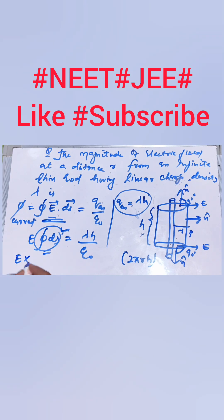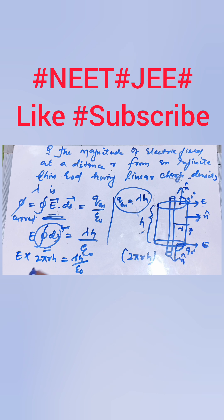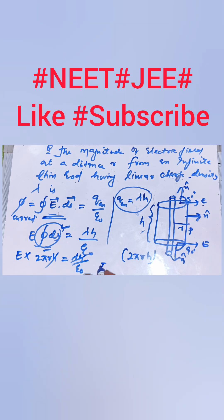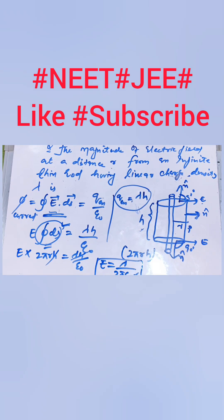So it will be E times 2πrh equals lambda times h divided by epsilon not. And we get E equals lambda divided by 2π epsilon not r. So this is our expression.